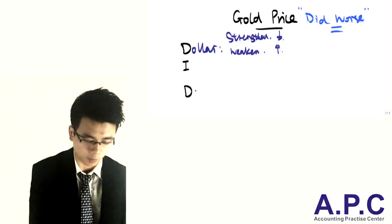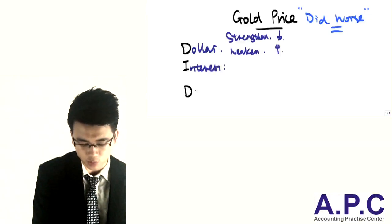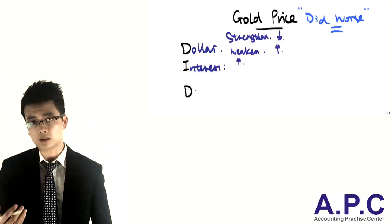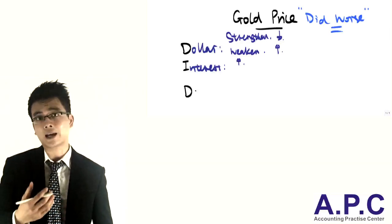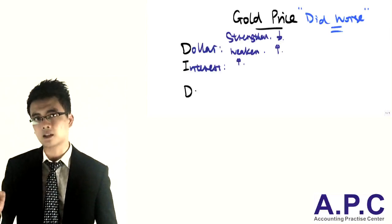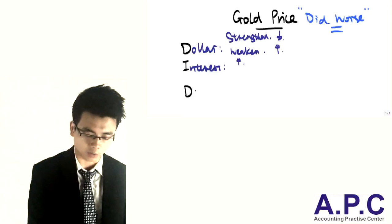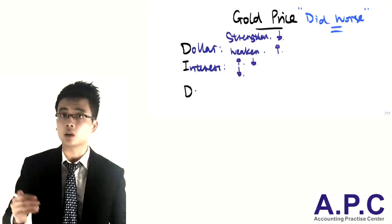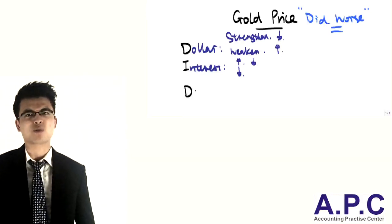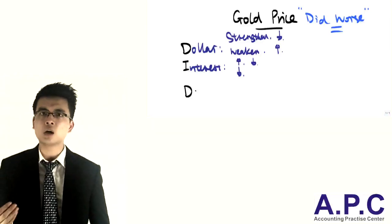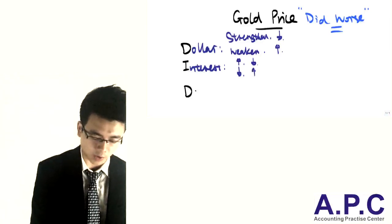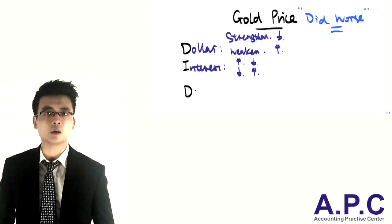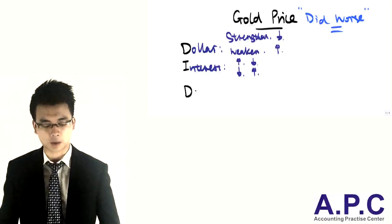The second factor, I, would be the interest rate. If the interest rate actually increases, which means you want to save, you can put your money into the bank, and hence rather than investing your money into buying gold, the price of gold will fall. If the interest rate falls, you're not going to put your money into the bank because that is not attractive at all. The price of gold will increase because you can spend your money buying gold to earn a higher capital gain, for example.